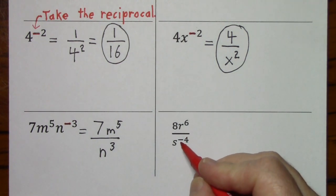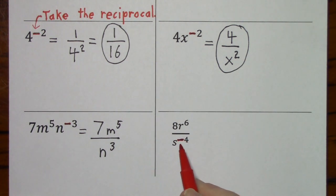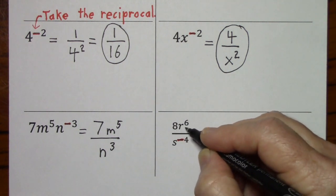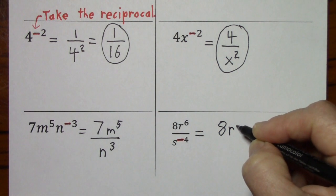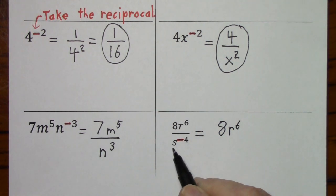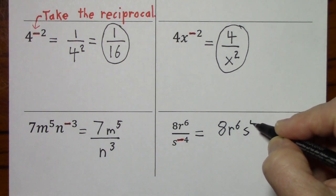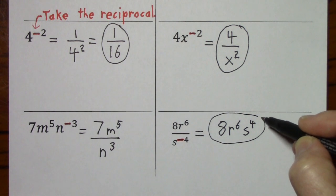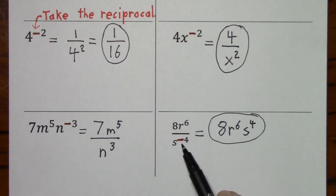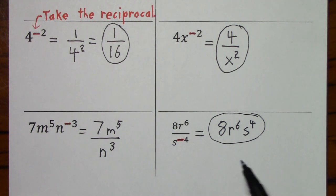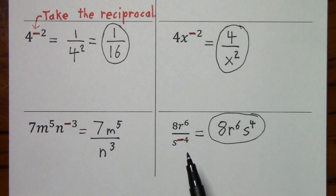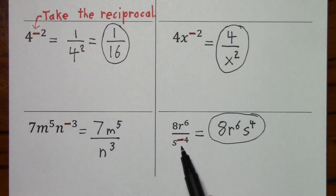Looking at this example, we have our negative exponent in the denominator, but that means take the reciprocal. So what you end up with is 8r to the sixth still in the numerator, and s to the negative four shifts up to the numerator and becomes s to the positive four. We took the reciprocal — it was in the denominator, and now it's in the numerator. I don't have to put this over one because that doesn't affect the value. In general, you'll just move it across the division bar and change the sign of the exponent.